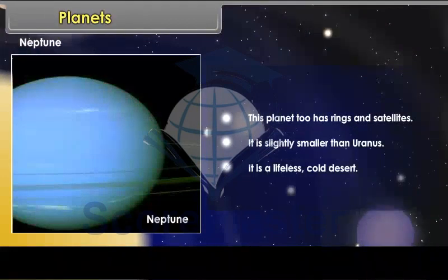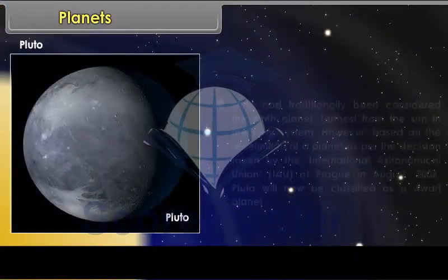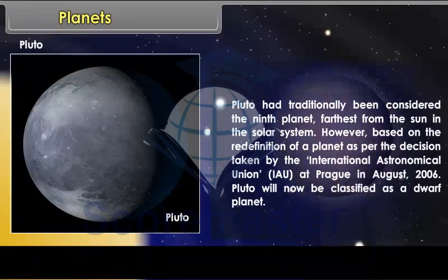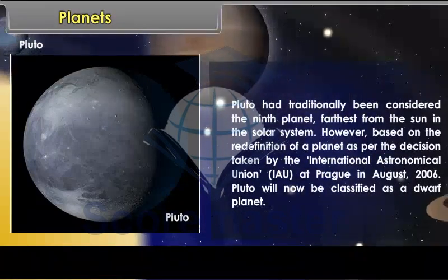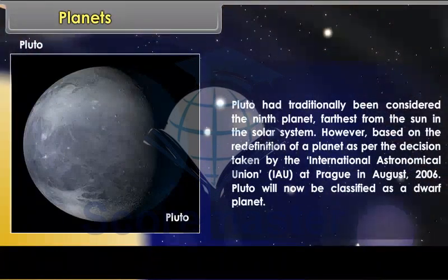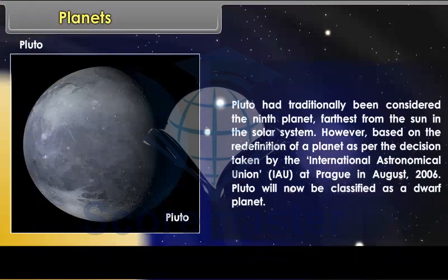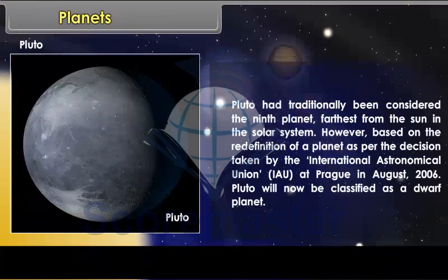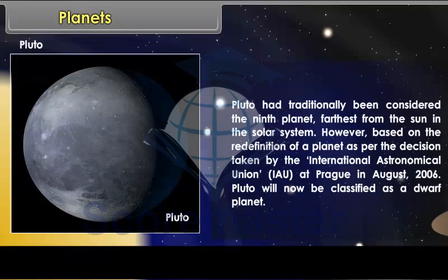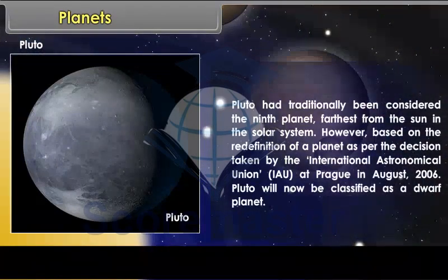Pluto. Pluto had traditionally been considered the ninth planet, farthest from the Sun in the solar system. However, based on the redefinition of a planet, as per the decision taken by the International Astronomical Union, IAU, at Prague in August 2006, Pluto will now be classified as a dwarf planet.